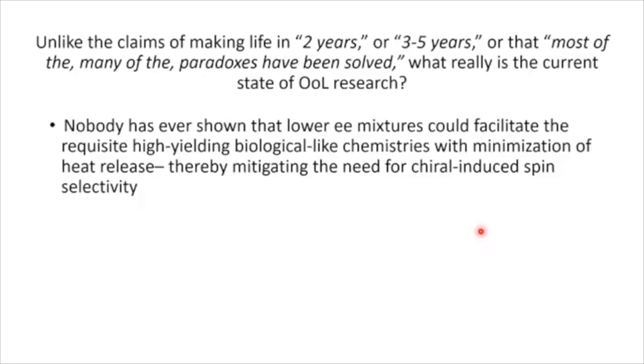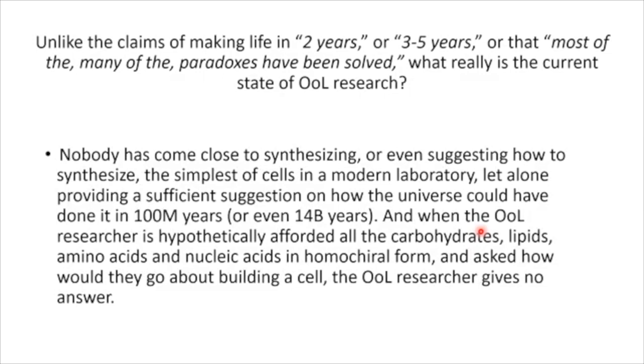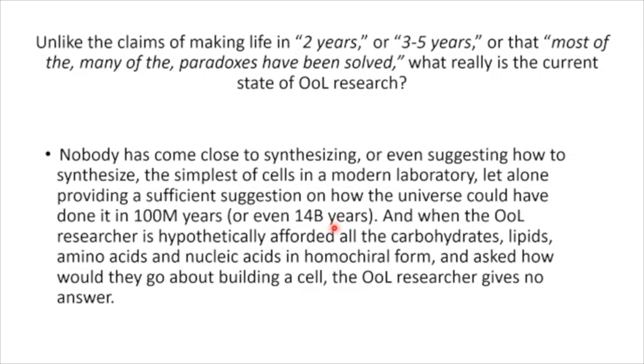Nobody has shown that low enantiomeric excess mixtures could facilitate the requisite high-yielding biological-like chemistries with minimization of heat release, thereby mitigating the need for chiral-induced spin selectivity. We do all these computations in our mind and dispel only 10 watts, while a computer puts out far more heat — because of chiral-induced spin selectivity. You had to have chirality from the beginning; it's not something you could have evolved into. Nobody can explain the requisite interactomes — the 10^79 billion combinations. Even given all four classes of molecules in any desired order, nobody could prepare even the simplest cell. Nobody has come close to synthesizing it in a modern laboratory, let alone suggesting how the universe could have done it in 100 million years — or even 14 billion years. Nobody has even a hypothetical method for doing this.